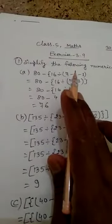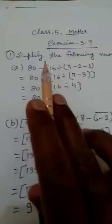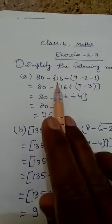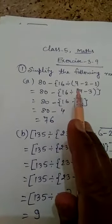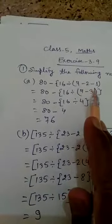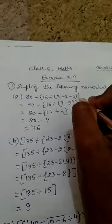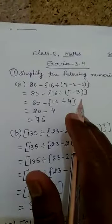Now we will start exercise 3.9. Question number 1: 80 minus curly braces, 16 divided by small brackets, 7 minus 2 minus 1, small brackets close, and then curly braces closed.